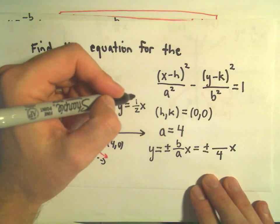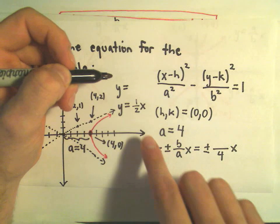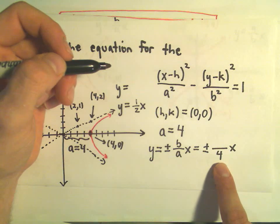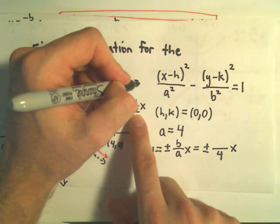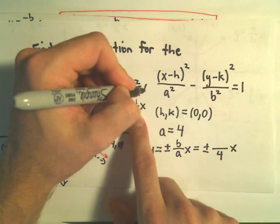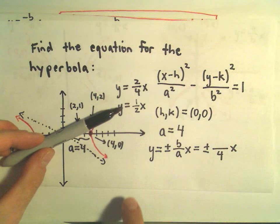Well, I can rewrite this asymptote, y equals 1 over 2x. I could get a denominator of 4. And if I multiply top and bottom by 2, I would get 2 over 4x as this asymptote.